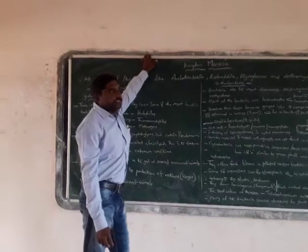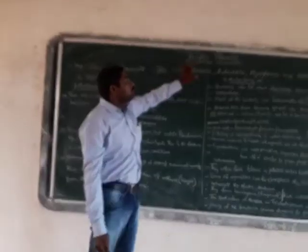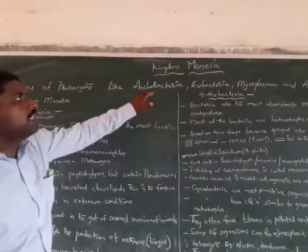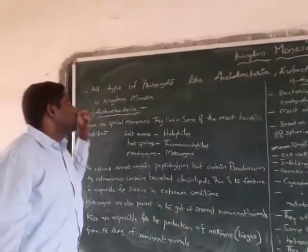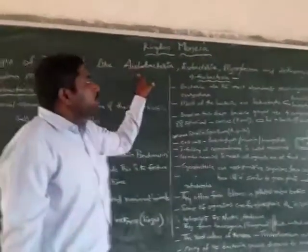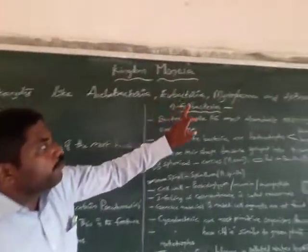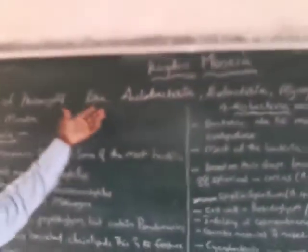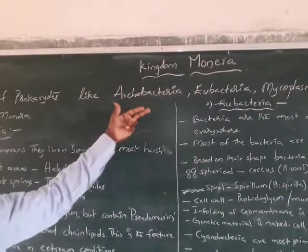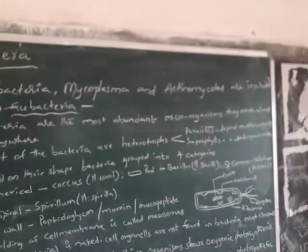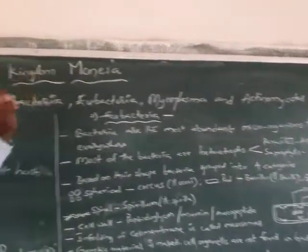Today we discuss about Kingdom Monera. This kingdom includes all types of prokaryotic cells like archaebacteria, eubacteria, mycoplasma, and actinomycetes. These four prokaryotic organisms are included under Kingdom Monera.